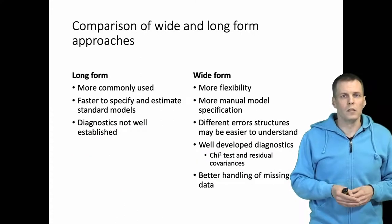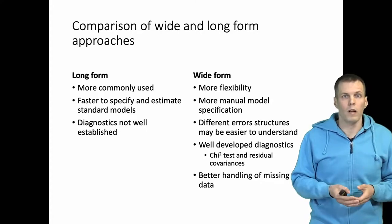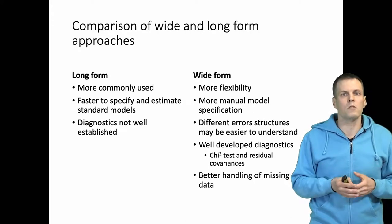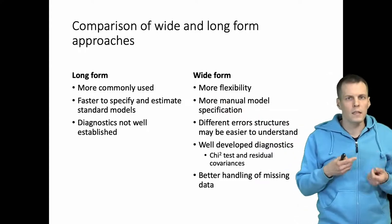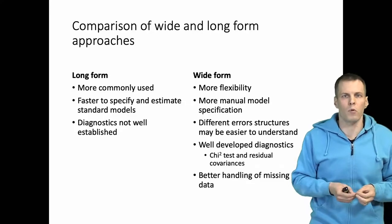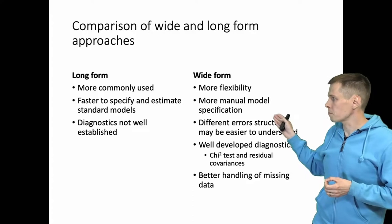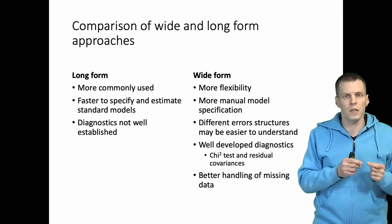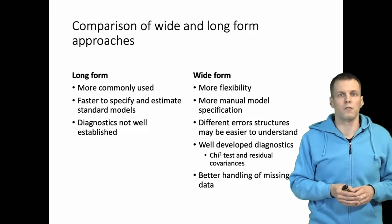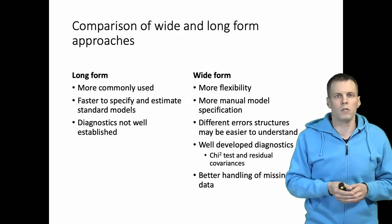We can do all kinds of things with longitudinal data using SEM by modeling unobserved heterogeneity as a latent variable and specifying different error covariance structures. What are the advantages and disadvantages of these two modeling approaches? The long form is more commonly used and easier to specify — you just specify the dependent variable, independent variable, and clustering variable, then choose an error structure and estimate. In wide format, you have more manual model specification, and with 10 repeated observations the model can get rather large.